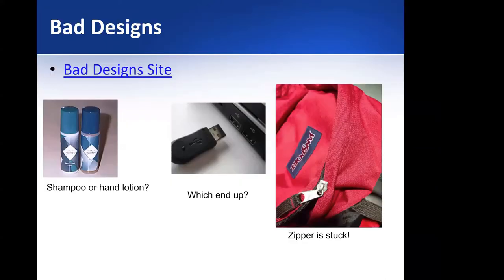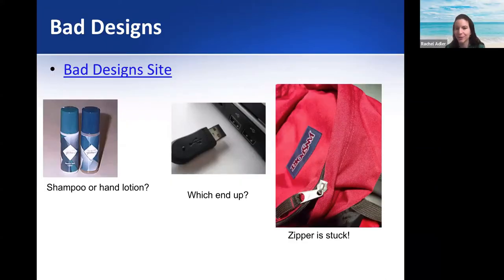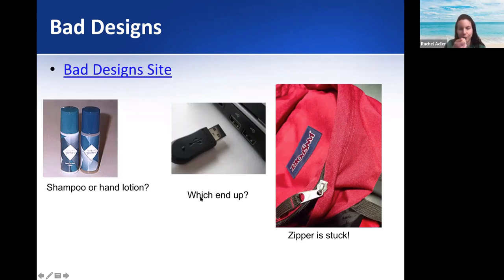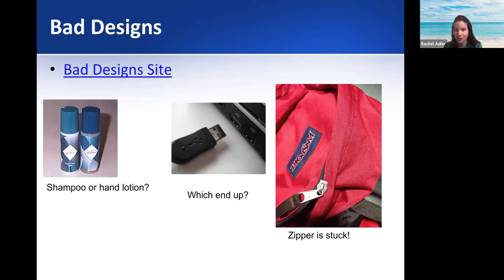So last week we spoke about good and bad design, and we're going to continue with that topic today. We spoke a lot about this last time and there's a link you can go to if you want to see examples of other bad designs. Like the flash drive where you're putting it in one side, then you have to flip and you're never sure which way to do it. The Jansport backpack where the zipper gets caught — that happens to me and my kids all the time — and I spend the whole time struggling to undo the zipper.